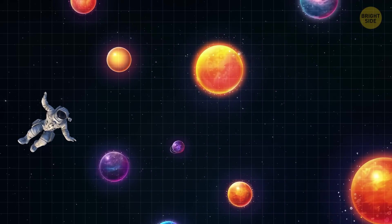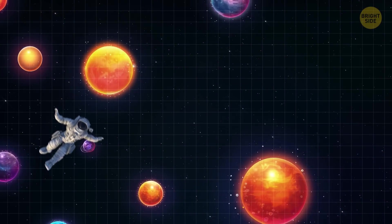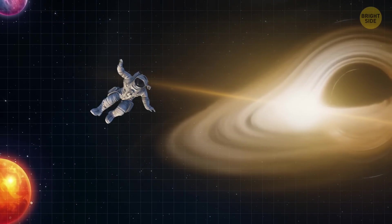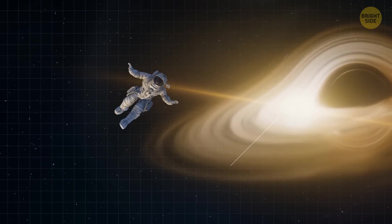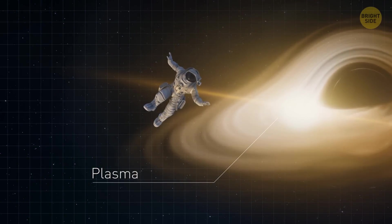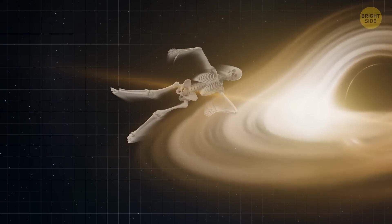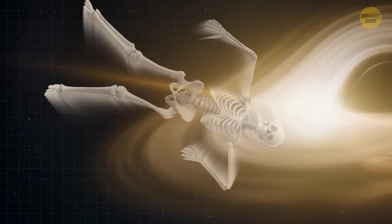Now, even if you somehow manage to get on the right path and avoid all the obstacles, there's still a dangerous situation waiting for you. The intense heat and energy around the black hole, called plasma, would fry you as you get closer. So, you would need some impossibly strong protection to get even close to it.